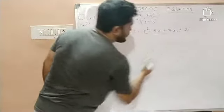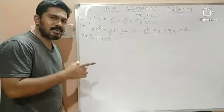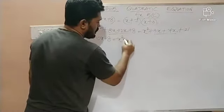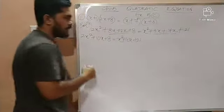I have 3x plus 7x. What is 3x plus 7x? 10x. So this whole thing will become x²+10x+21.